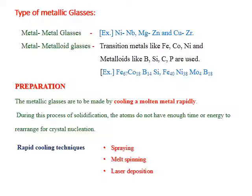Metallic glasses are made by cooling a molten material rapidly. During solidification, atoms do not have enough time or energy to rearrange to create a crystalline nucleation, so they do not form any crystalline structure. Several rapid cooling techniques are available for producing metallic glasses: spraying technique, melt spinning technique, and laser deposition methods. In this class, we will discuss the melt spinning technique.